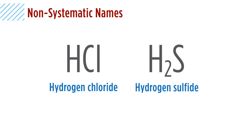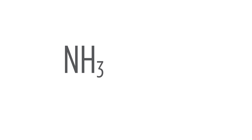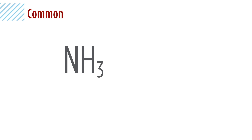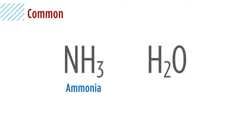We also have some compounds like NH3 that use a common name — nothing related to the elements in it. For these, there's a set of common names we need to know. NH3 is ammonia, which you may be familiar with. And H2O, rather than dihydrogen oxide or hydrogen oxide, uses its common name: water.